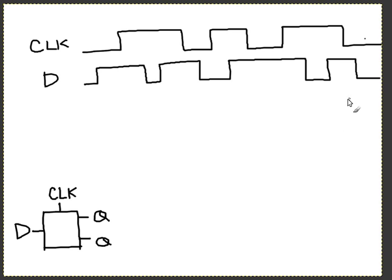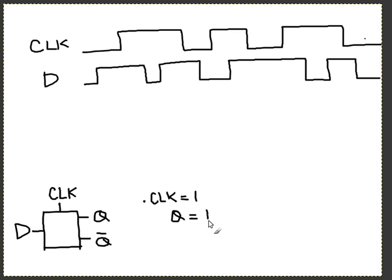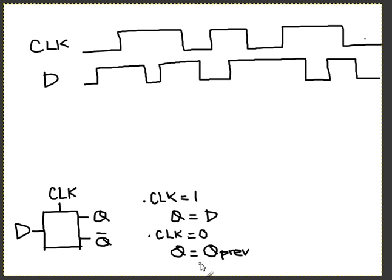In this video I'll be talking about D latch and D flip-flop. A D latch takes in an input D, a clock, and outputs Q and Q'. D controls the output. There are two cases: when clock equals one, Q is going to be D. When clock equals zero, Q is going to hold the value of the previous Q. That is all you need to know for a D latch.